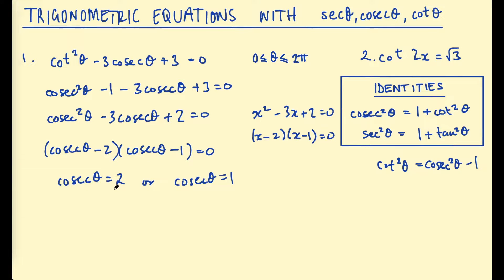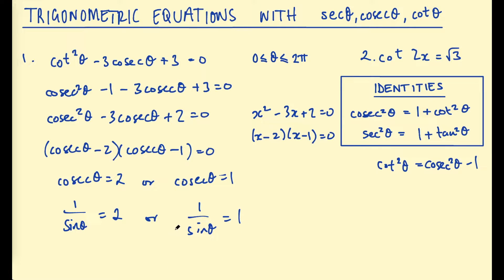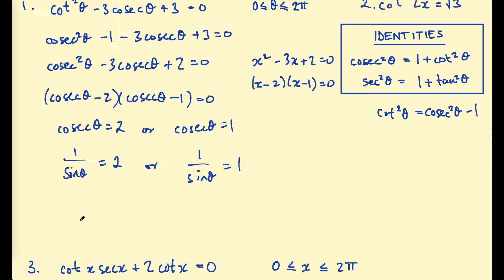Now is a good time to write cosecant in terms of sine theta. Remember: secant is 1 over cosine theta, cosecant theta is 1 over sine theta, and cotangent is 1 over tan theta. Substituting in for cosecant, we get 1 over sin θ equals 2 or 1 over sin θ equals 1. It follows that sin θ equals 1/2 or sin θ equals 1.